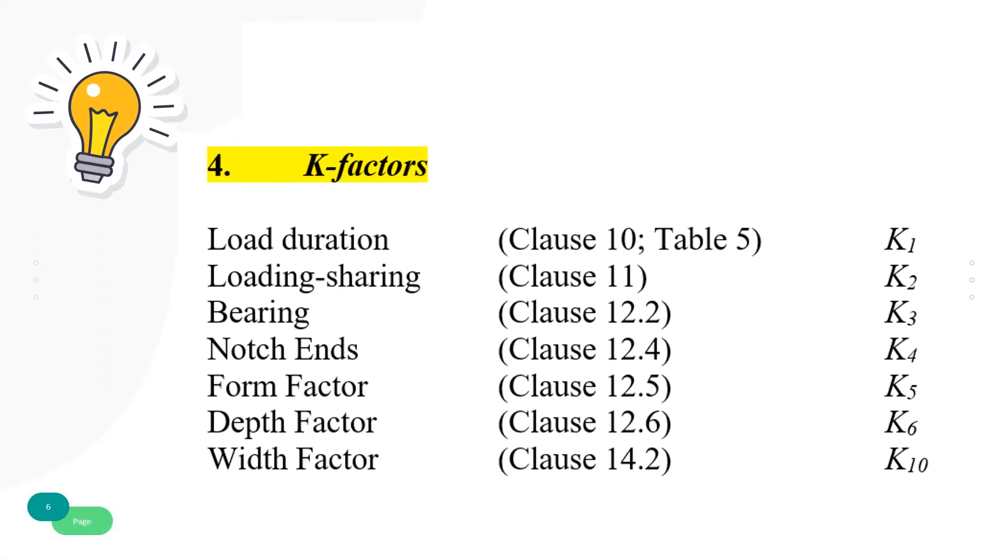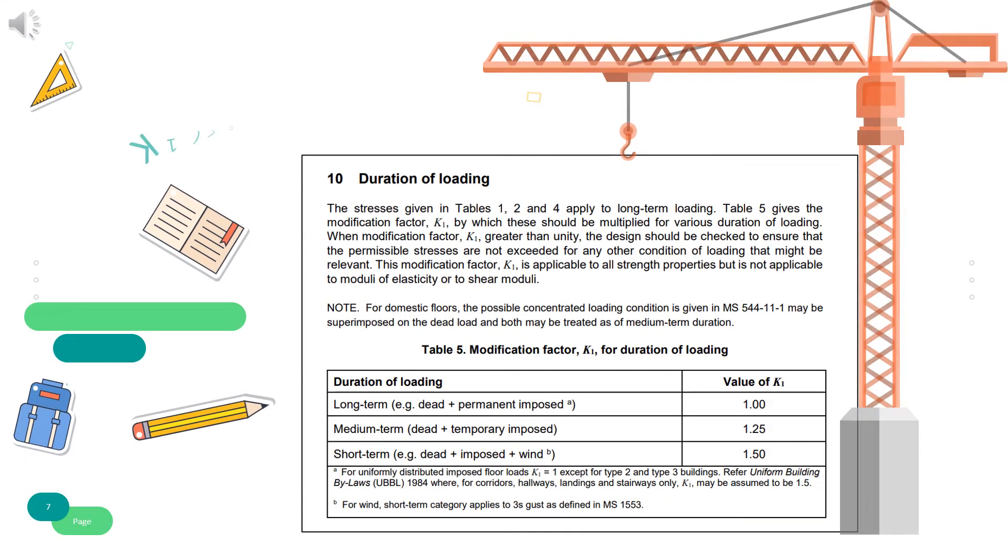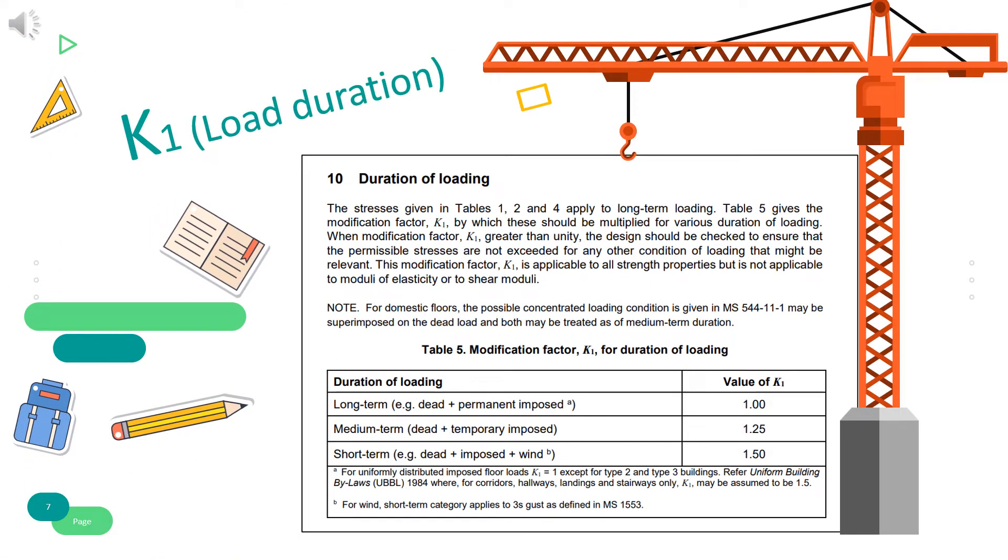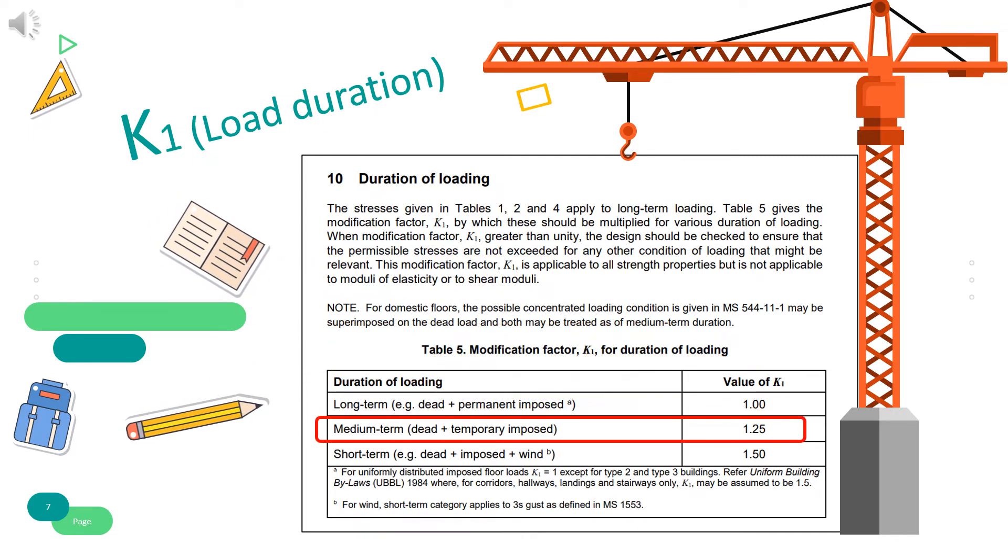Modification factors should be applied to the grade stresses as given in tables in Malaysian standard to obtain permissible stress. There are 7 modification factors to be considered for tension members K1 up to K6 and K10, based on the given situations. Refer to Table 5 for modification factor K1 for duration of loading. In this question, for a condition of load duration medium term, K1 is 1.25.